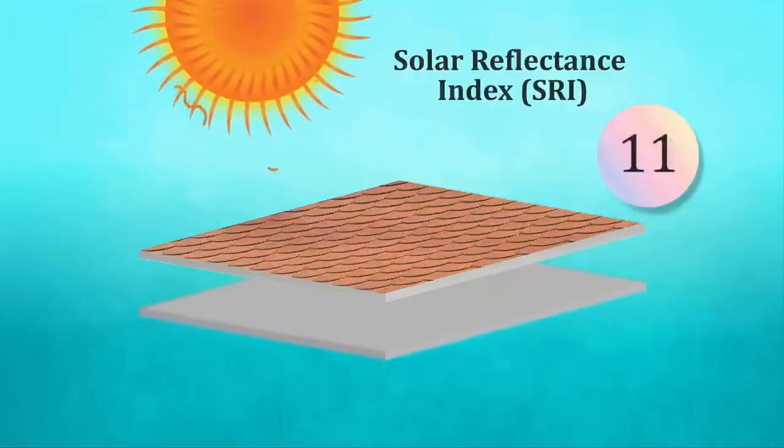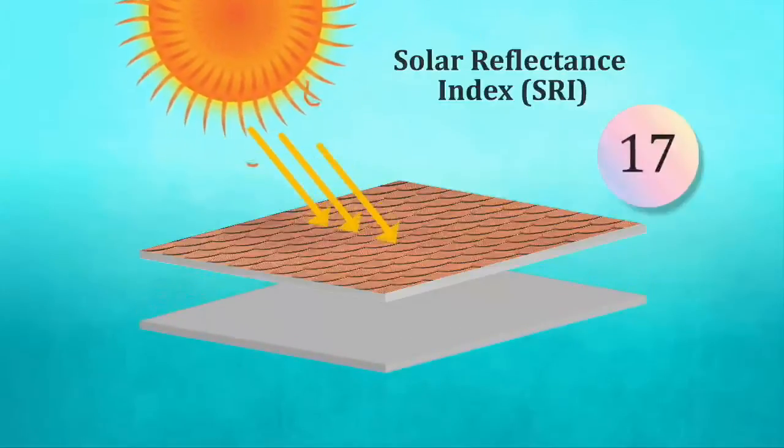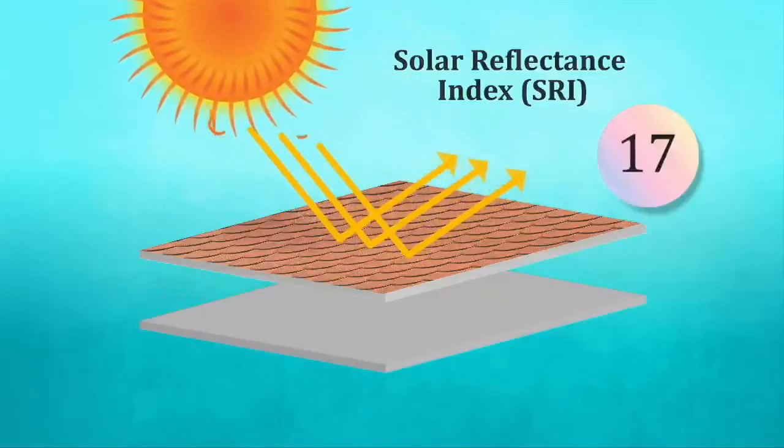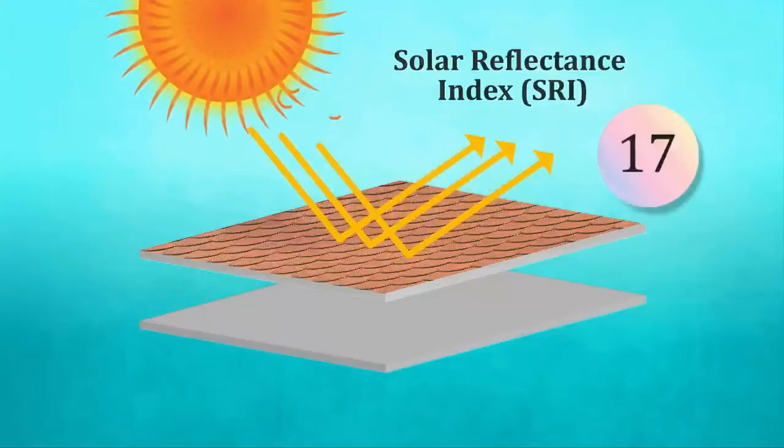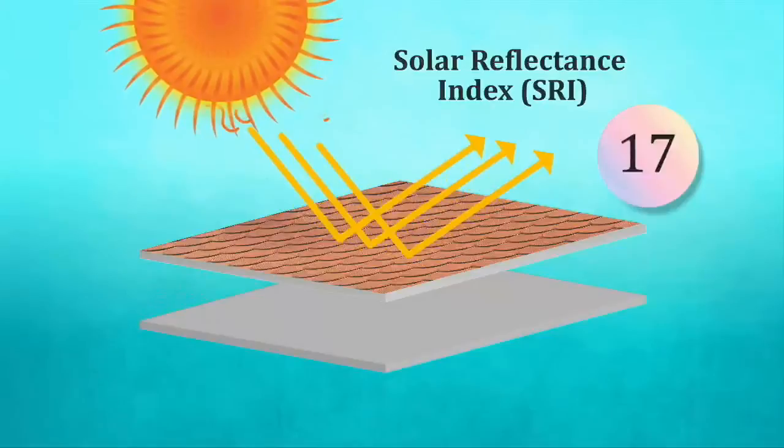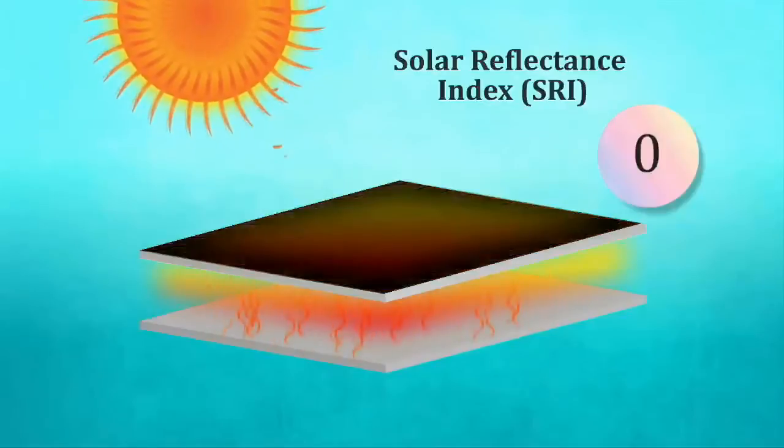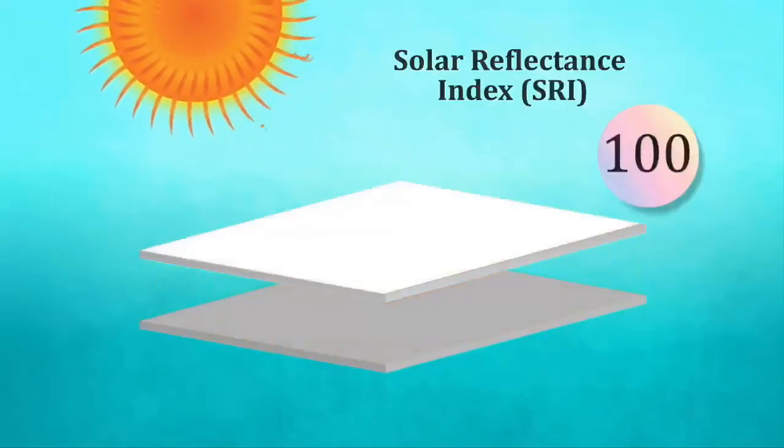High SRI materials stay cooler and help to mitigate UHIs. SRI is a numerical number of a surface's ability to reflect solar radiations. A standard black surface is zero and a standard white surface is 100.